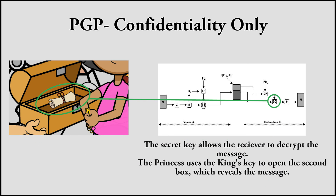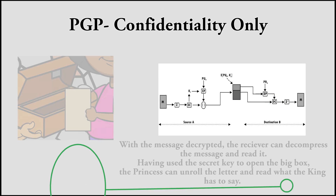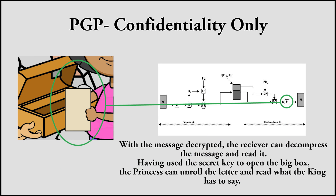The secret key allows the receiver to decrypt the message. The princess uses the king's key to open the second box, which reveals the message. With the message decrypted, the receiver can decompress the message and read it. Having used the secret key to open the big box, the princess can unroll the letter and read what the king has to say.